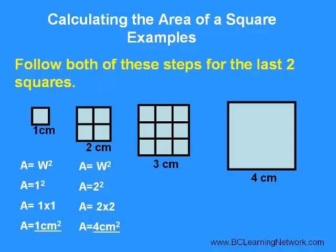For this third square, there are 9 unit squares that would fit inside. And for our formula, width would be 3, so A equals 3 squared, which is 3 times 3 or 9 square centimeters.